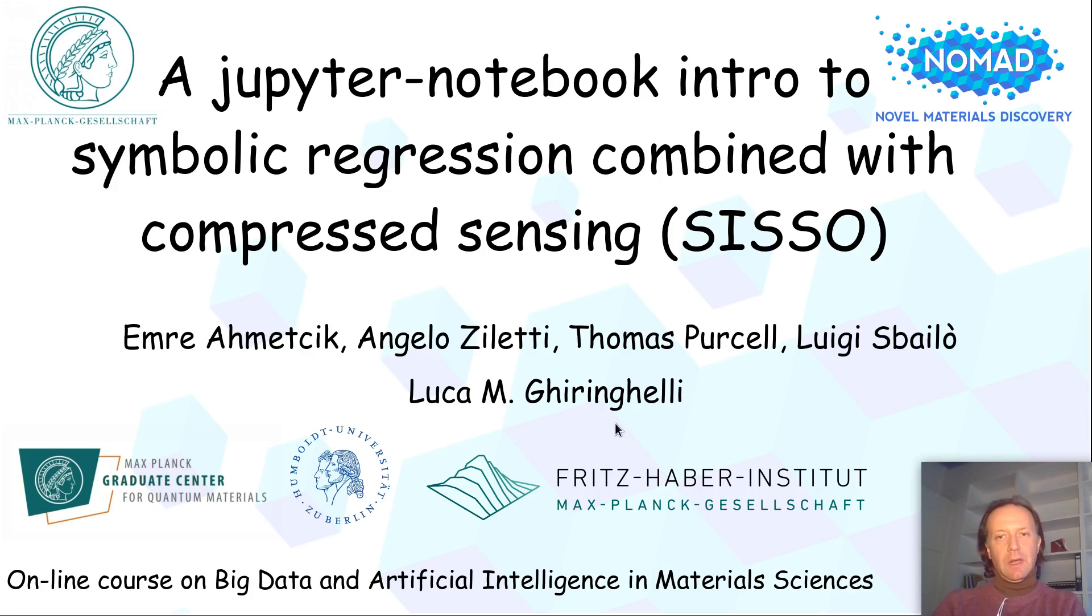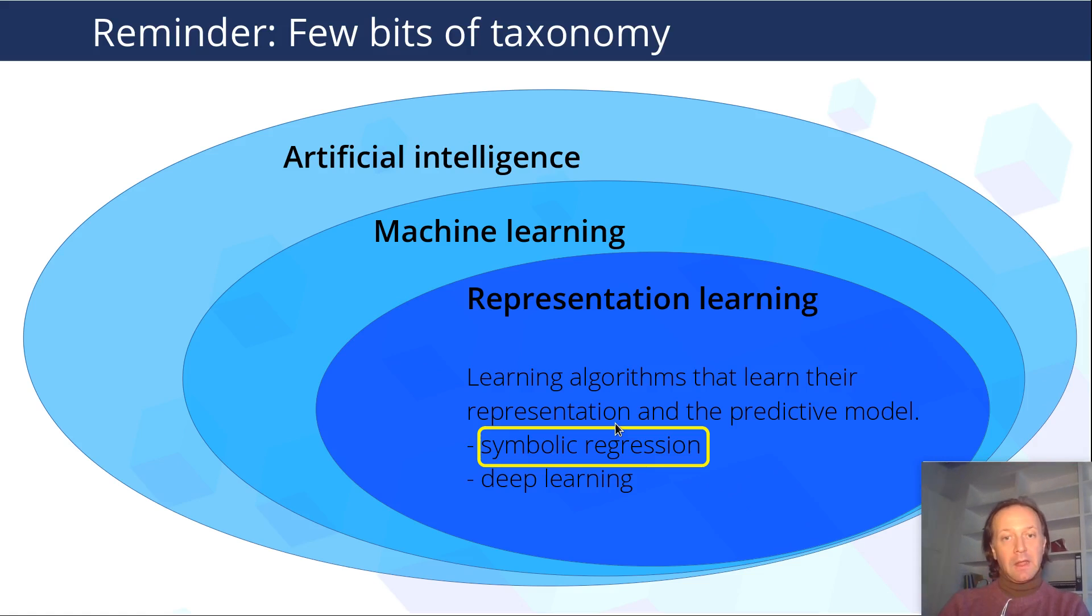So just a recap that symbolic regression combined with compressed sensing is in this representation learning subdivision of machine learning.